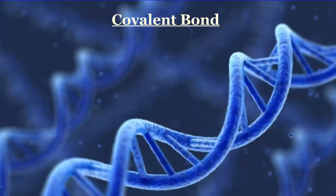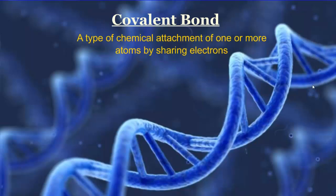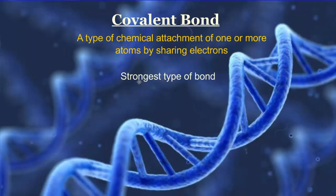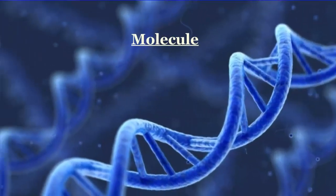A covalent bond also attaches atoms together, but differently than ionic bonds. A covalent bond is a type of chemical attachment where atoms share electrons. This is a very common form of bonding among biochemicals because it is the strongest type of bond. It takes lots of energy to build them, making it a good way of storing energy for living things. An example is sugar, or C6H12O6.